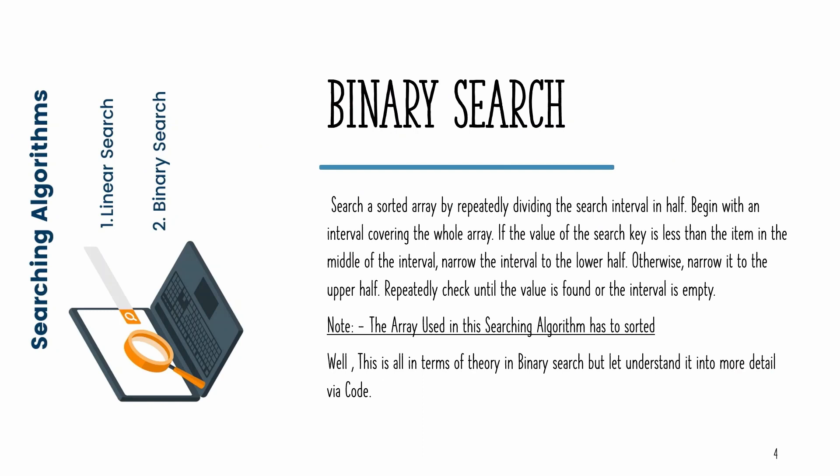Binary search is an algorithm where we search a sorted array by repeatedly dividing the search interval in half. Begin with an interval covering the whole array. If the value of the search key is less than the item in the middle of the interval, narrow the interval to the lower half; otherwise narrow it to the upper half. Repeatedly check until the value is found or the interval is empty. Note that the array must be sorted.